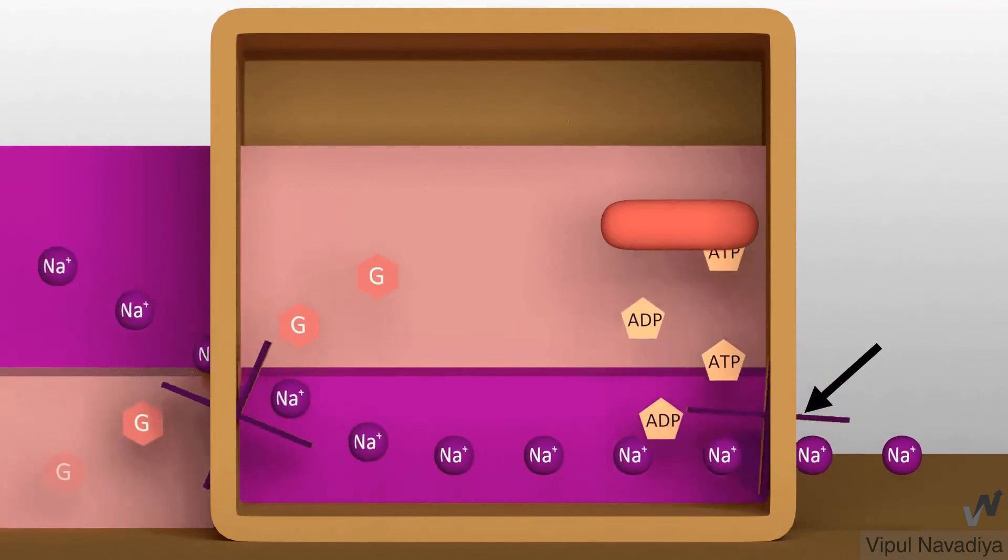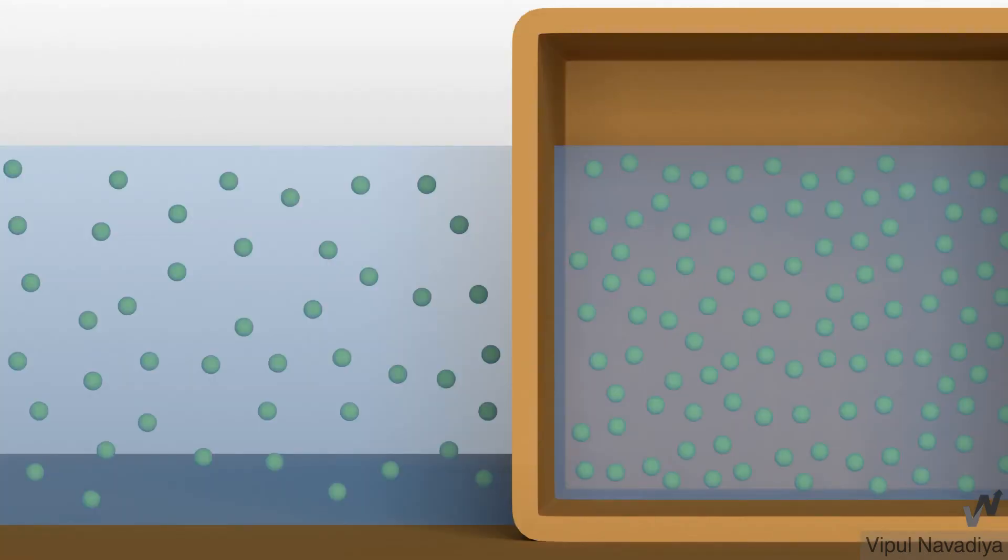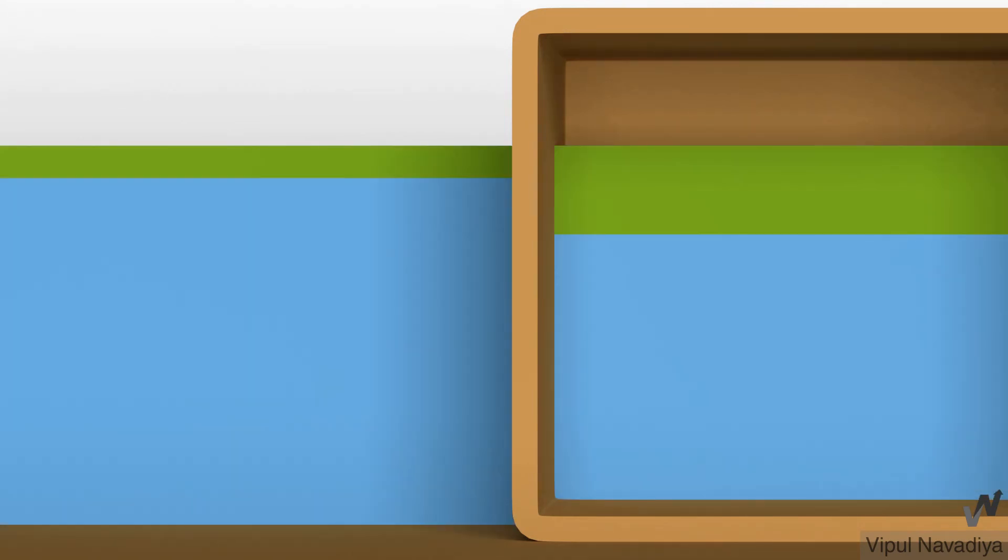So far, we have seen transport of solute. Now, let's see transport of solvent that is water. Water movement always occurs by osmosis which is basically movement from area of high water concentration to low water concentration. Let me show you. These are two solutions with different solids dissolved in water. To have the idea about relative water concentration, we will assume that all the water molecules are settled down and other solids are floating on the top. Now, we can see that this solution has high water concentration than this one.